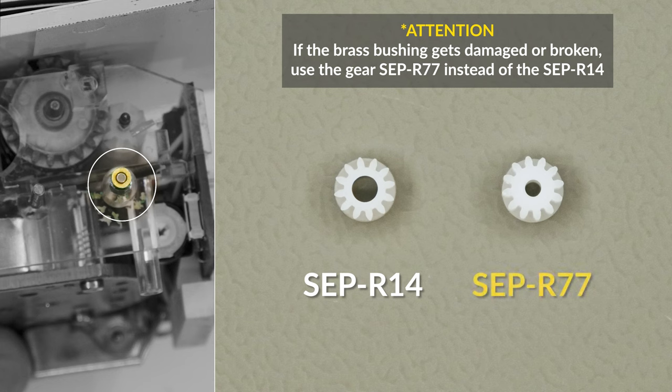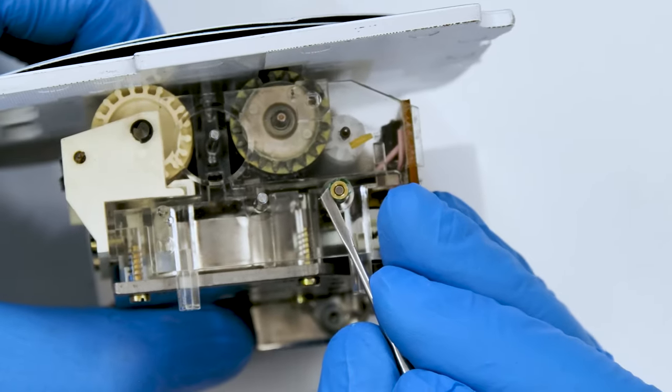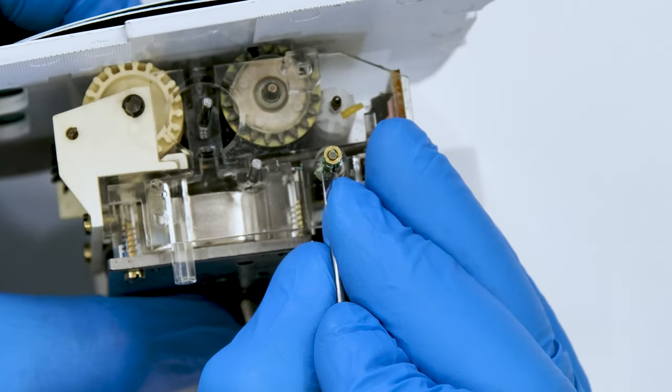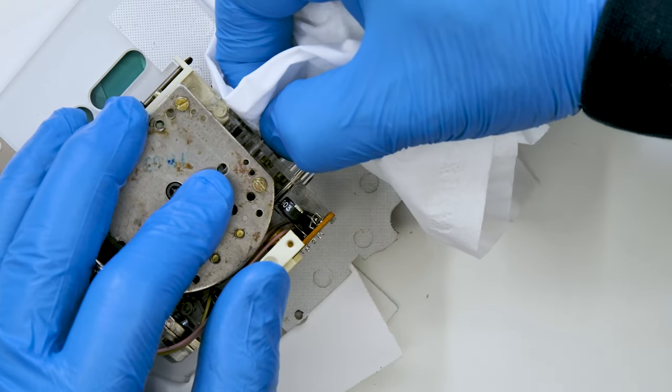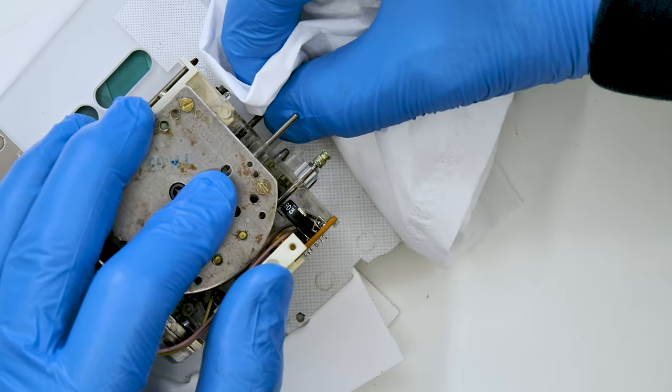Use the gear SEP R77 instead of the SEP R14. With the head of the flat T-probe, carefully remove any plastic residue from the brass bushing. Clean the other metal shafts as well.